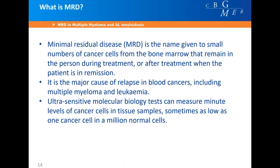Minimal residual disease is the name given to small numbers of cancer cells from the bone marrow that remain in a person during or after treatment when the patient is in remission. It is the major cause of relapsing blood cancers including multiple myeloma and leukemia. Ultra-sensitive molecular biology tests can measure minute levels of cancer cells in tissue samples — sometimes as low as one cancer cell in a million normal cells.